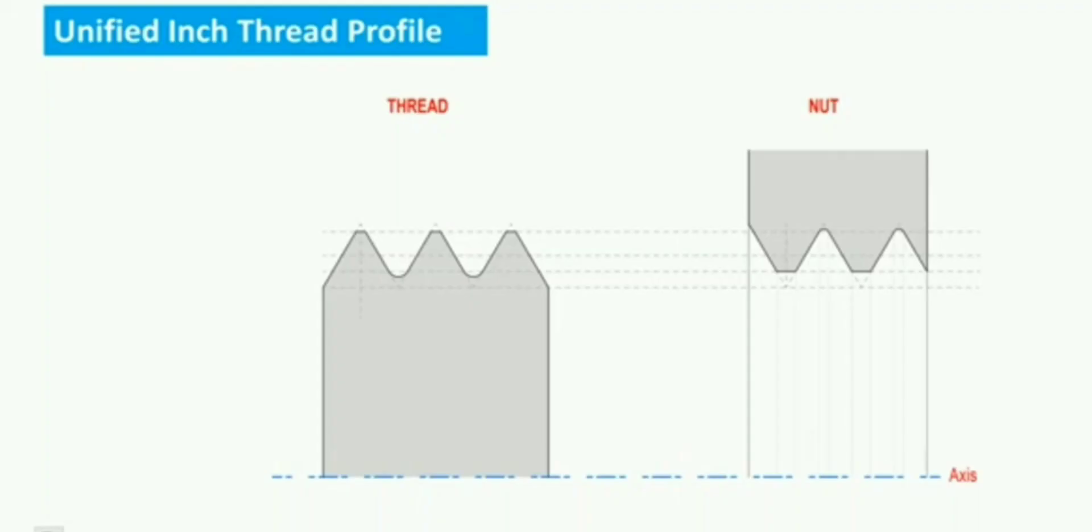Unified Threads is a standardized system of thread used for fastening such as bolts, screws and nuts in the United States and Canada.